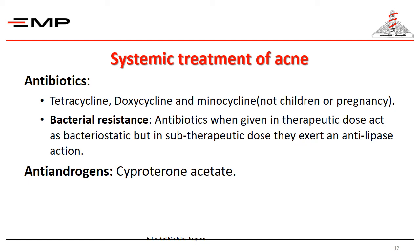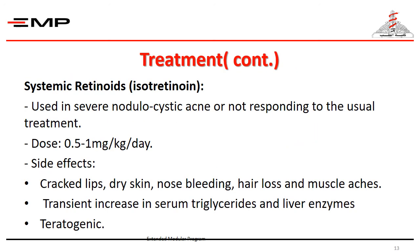Anti-androgens such as cyproterone acetate are also used. Systemic retinoids — isotretinoin — are used in severe nodulocystic acne or cases not responding to usual treatment, at a dose of 0.5 to 1 mg per kg per day. Serious side effects include cracked lips, dry skin, nosebleeds, hair loss, and muscle aches. There is also a transient increase in serum triglycerides and liver enzymes, and it must not be given during pregnancy as it is seriously teratogenic.